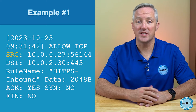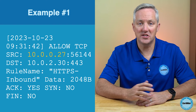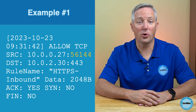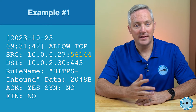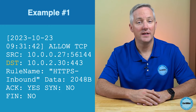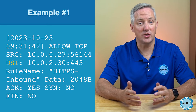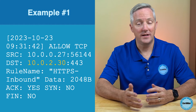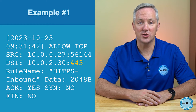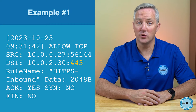SRC stands for Source, indicating where the data packet came from. It consists of an IP address and a port number. In this case, 10.0.0.27 is the source IP address, and 56144 is the port from which the data packet was sent. That port is an ephemeral port, automatically selected for a particular session by the source device. DST stands for Destination, indicating where the data is going. The destination consists of an IP address and a port number. Here, 10.0.2.30 is the destination IP address, and 443 is the destination port.